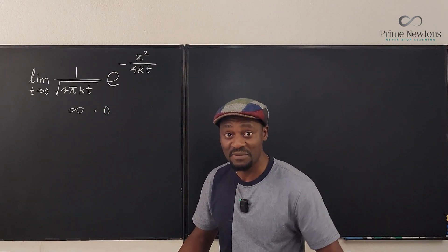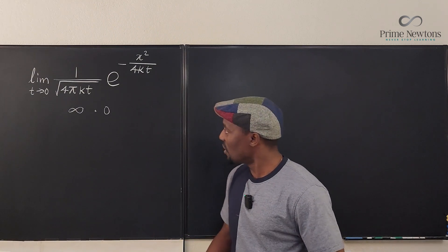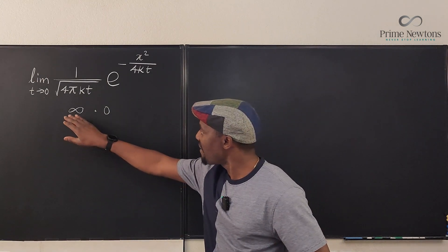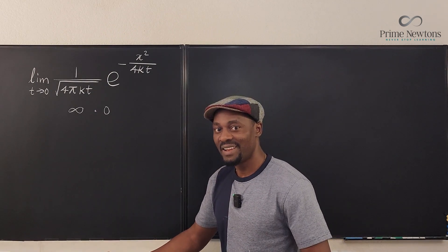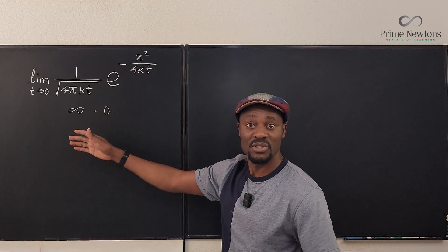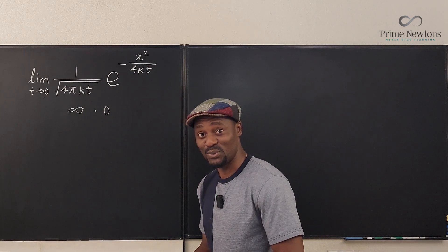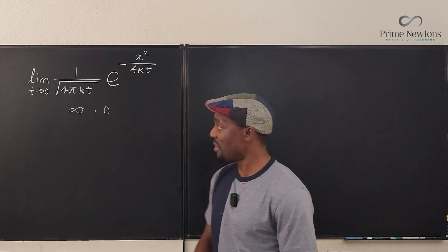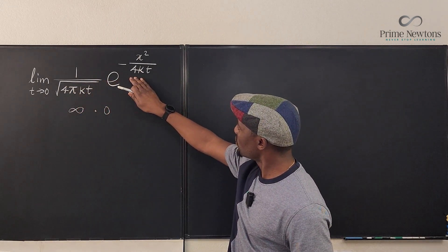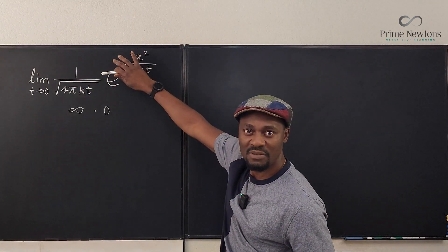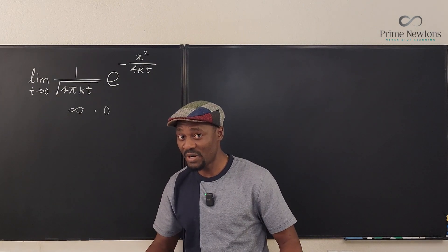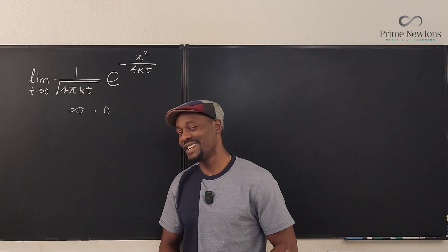In mathematics, you cannot multiply infinity by zero — it is indeterminate, not undefined. When you have an indeterminate form you have to simplify, but it's impossible to do any algebraic manipulation here. The only option is L'Hôpital's rule, but that presents a problem: you'd have to take the derivative of this entire function, and things get very complicated and messy. To avoid the mess, we'll do a u-substitution.